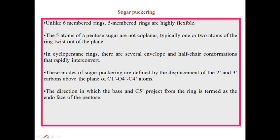Now let's talk about sugar puckering and what is the importance of sugar puckering in a DNA strand. The sugar puckering actually means the sugar ring. As you all know, the basic sugar glucose is made up of six carbons, so it's a hexagonal ring. But in the case of sugar from DNA, it is a pentose sugar, or five-carbon sugar. The structure of this pentose sugar is drawn simply, but actually the stereochemical conformation of the sugar can be drawn using boat and chair conformation.